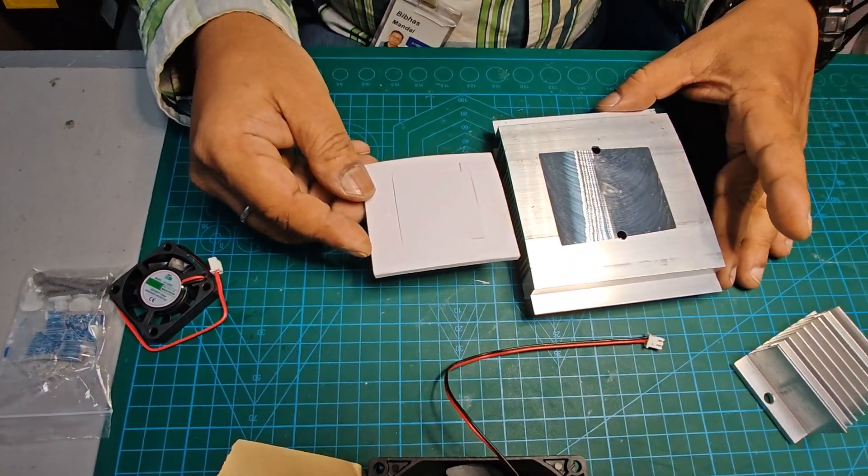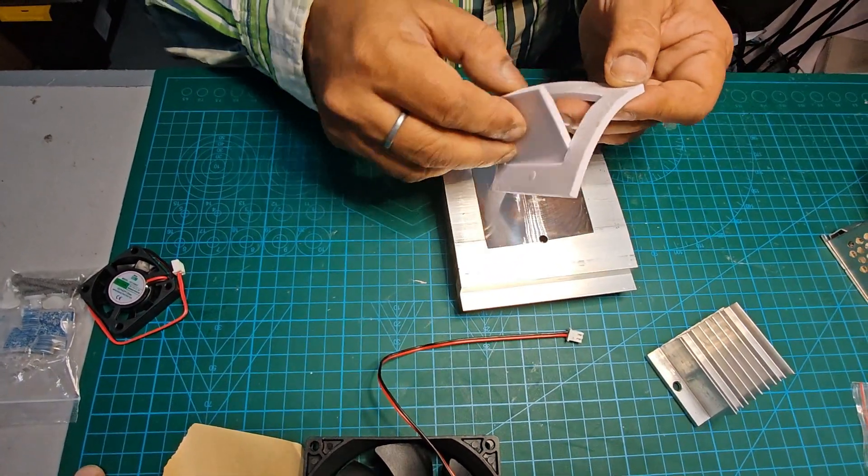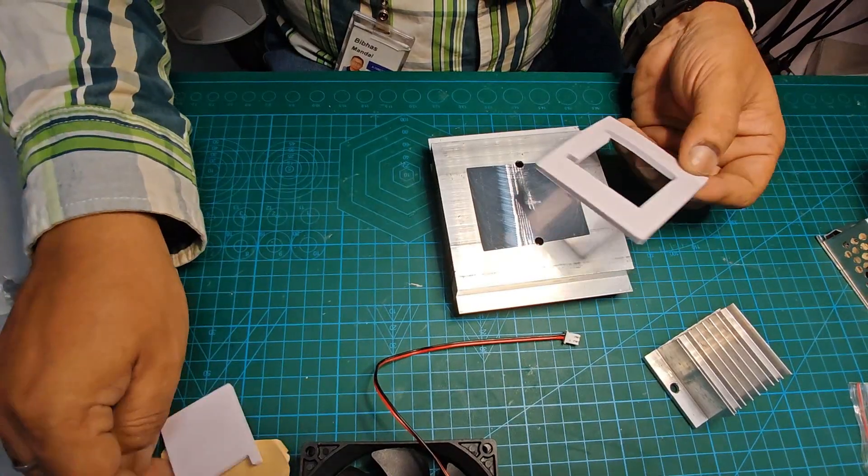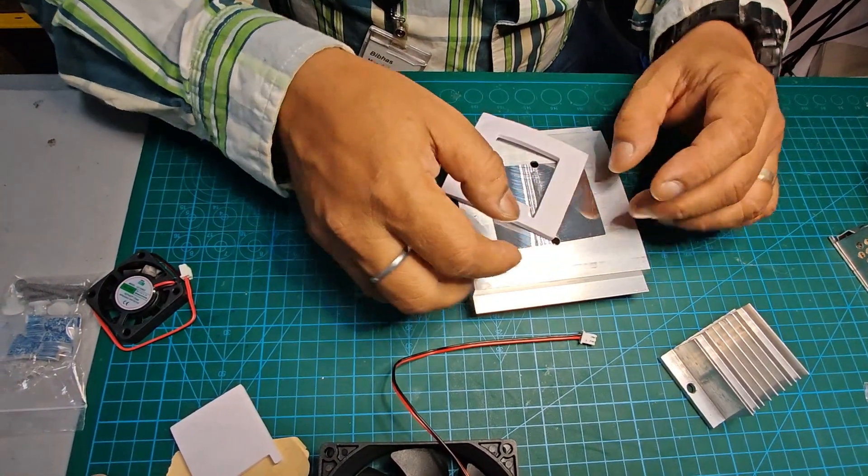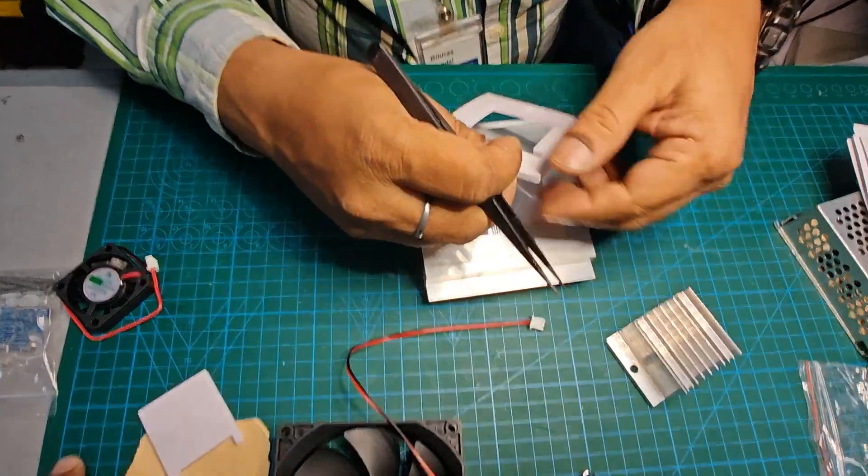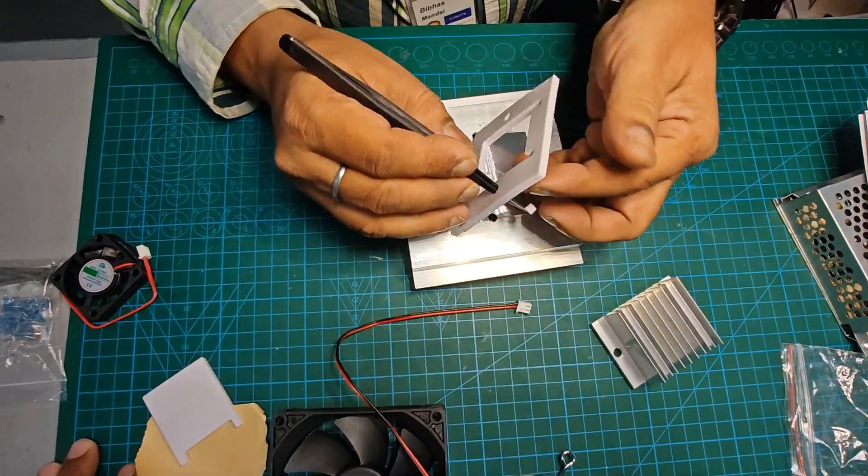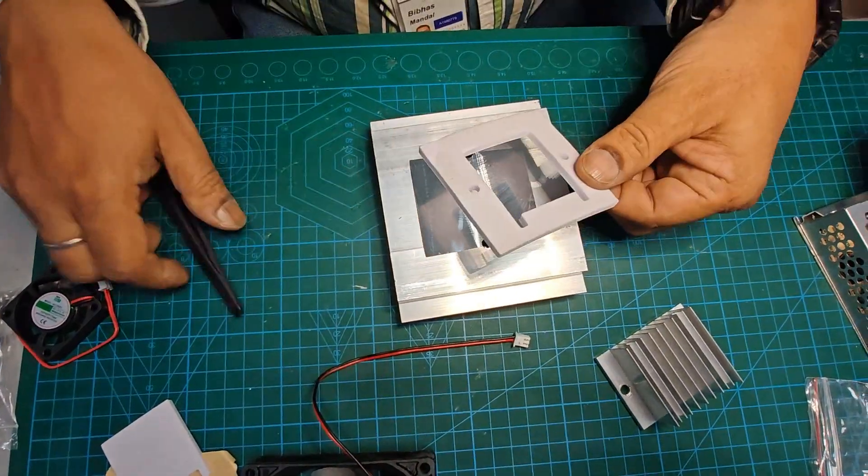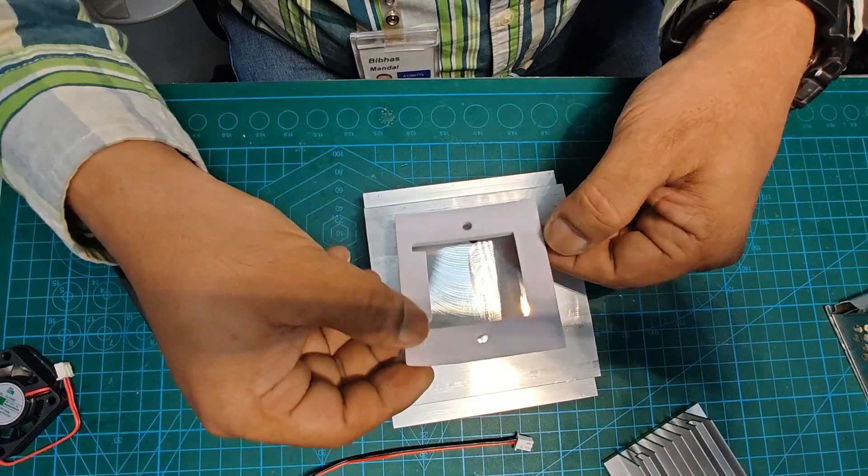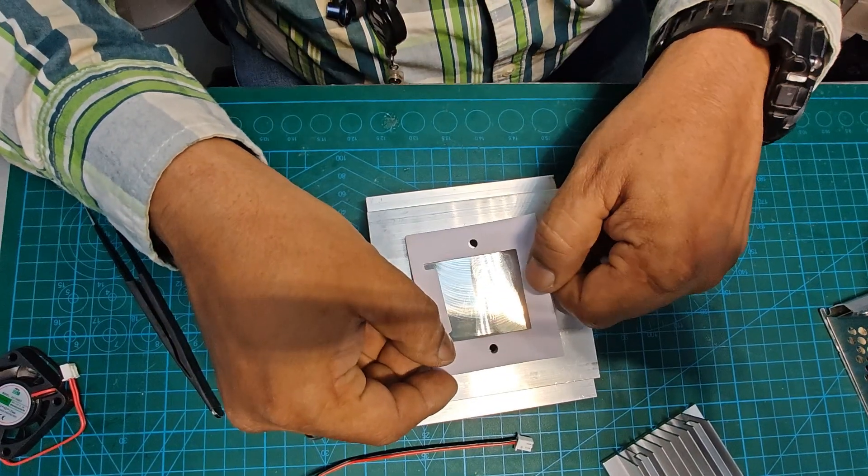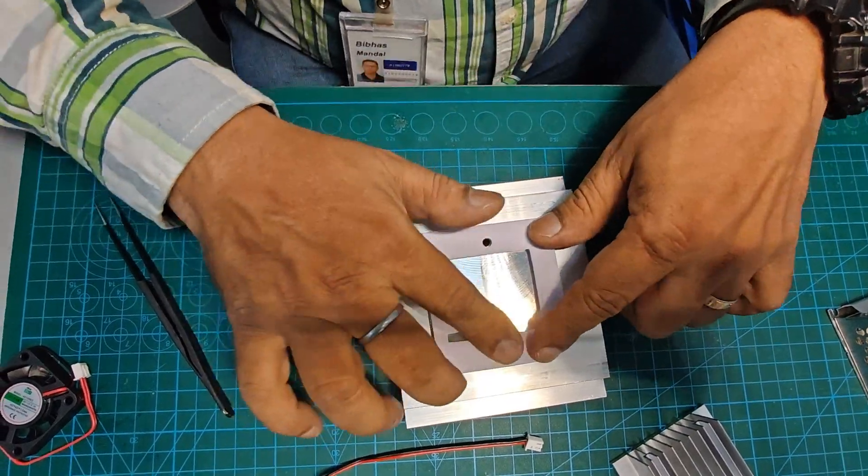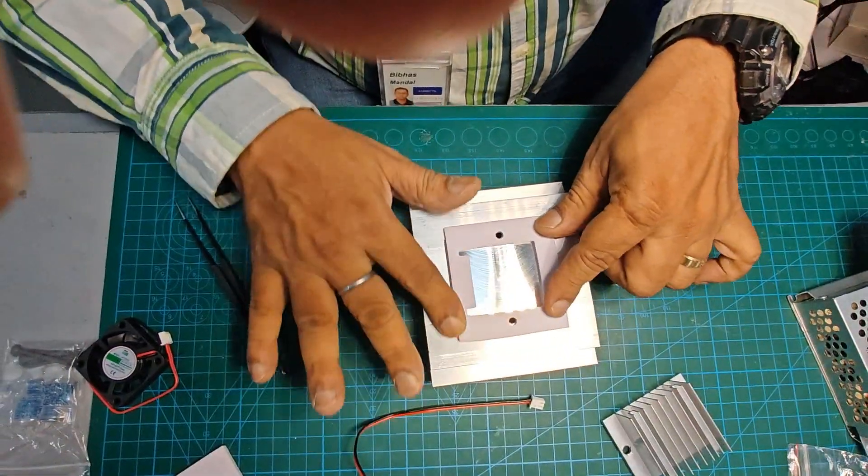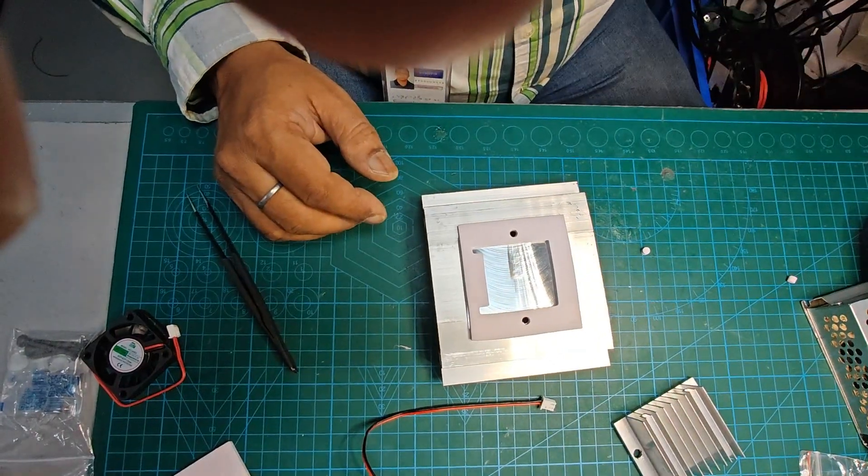So first you take a heat sink and take an insulator between the heat sink and Peltier. Remove the adhesive part, remove all the unwanted parts, place it properly on the heat sink. Try to match the holes because we are supposed to tighten a screw through it.